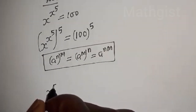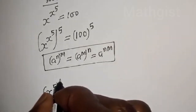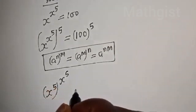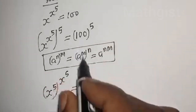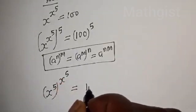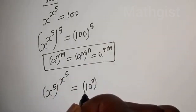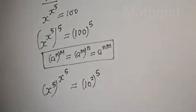Then, s raised to power 5, to the power of s raised to power 5, is equal to 100, which can be written as 10 squared to the power of 5.